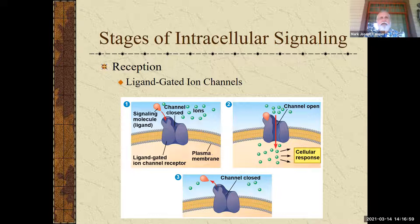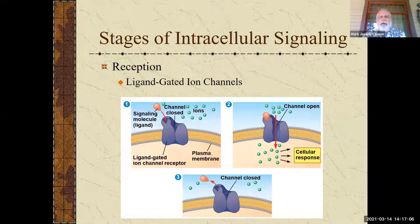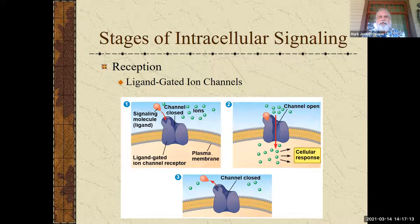A good example of this would be in your neurons. There's a calcium channel that has to open up, and when it opens, it allows calcium to go into the neurons. This allows vesicles to fuse to the synaptic terminal and allows neurotransmitters to go from one neuron to another. That would be an example of a ligand-gated ion channel.